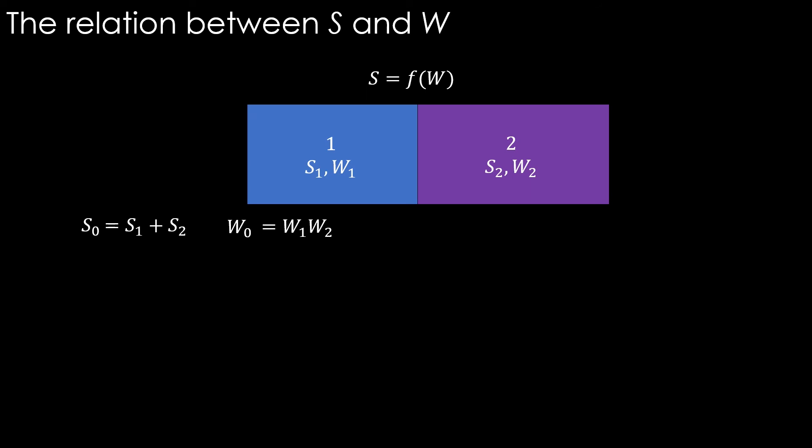You know when calculating the probability of one event and another event occurring, it takes multiplication of probabilities of each event. That's why the multiplication. Alright. Then S0 equals F of W1 plus F of W2 - two functions. But then S0 is also equal to F of W0, which is F of W1 multiplied by W2. So we can combine these two and write this: F of W1 plus F of W2 equals F of W1 W2.